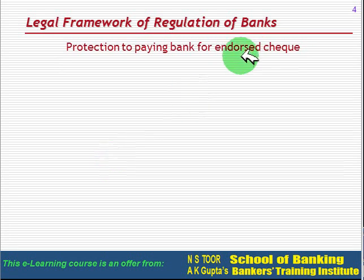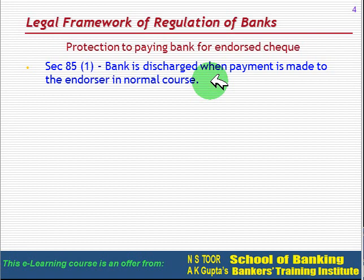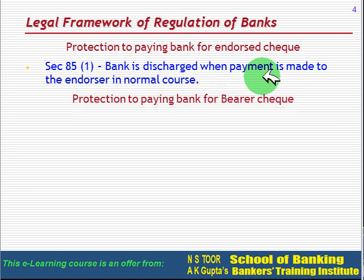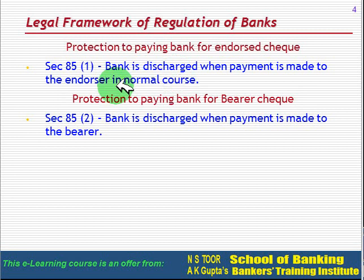As per Section 85, if a cheque is endorsed, the bank is discharged when payment is made to the endorsee in the normal course — not to the endorser. In case of bearer cheques, as per Section 85 subsection 2, the bank is discharged when payment is made to the bearer. So, for endorsed cheques, the bank is discharged upon payment to the endorsee in normal course; for bearer cheques, upon payment to the bearer.